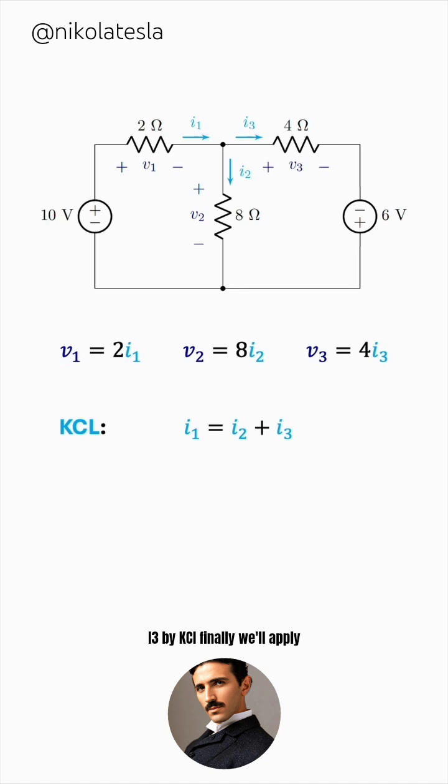Finally, we'll apply KVL. We'll draw a clockwise loop, like this, and this gives us negative 10 plus V1 plus V2 equals 0. Remember from my KVL overview, if we enter the negative terminal first, then the voltage will be negative, and if we enter the positive terminal first, we keep the voltage positive in the equation.